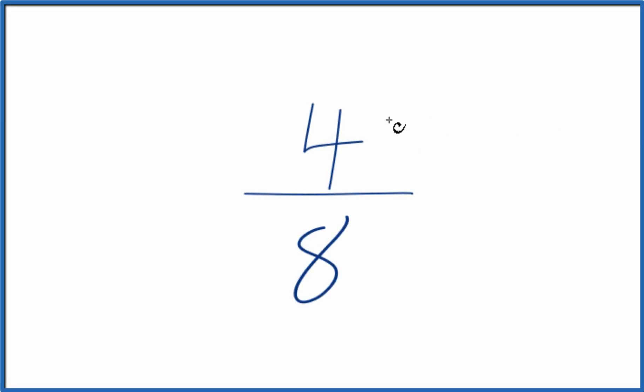Here's how you can find equivalent ratios for four eighths. We're going to multiply the numerator and the denominator by the same number.